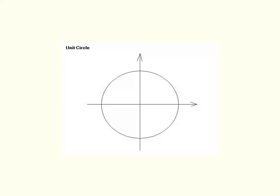This is a tutorial about putting the values of the special angles on the unit circle. Let's first start with the quadrantal angles: 0, pi over 2 or 90 degrees, pi, 3 pi over 2, and then 2 pi.